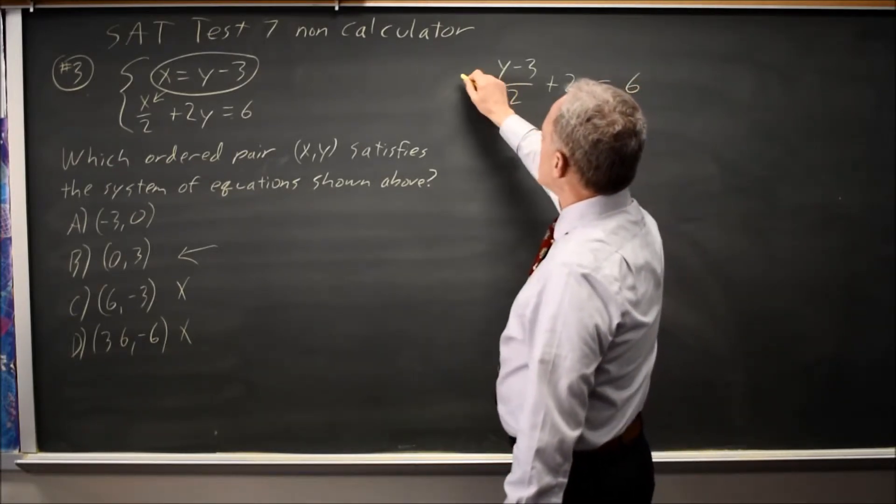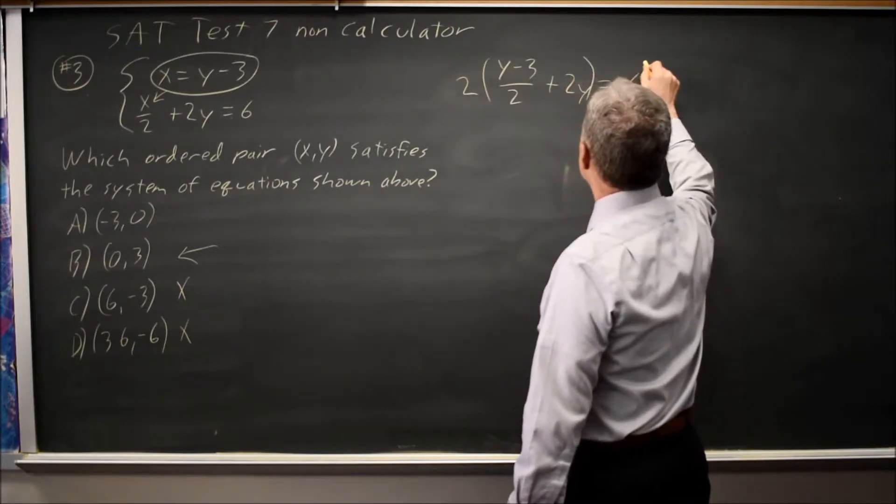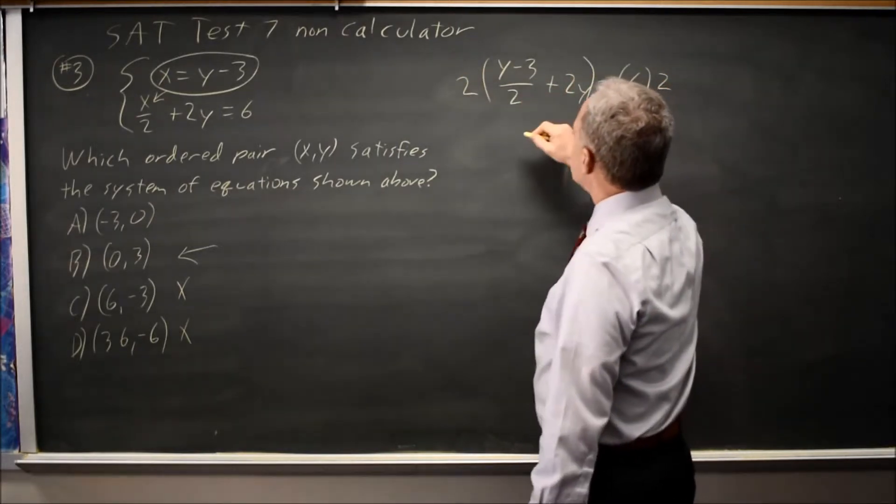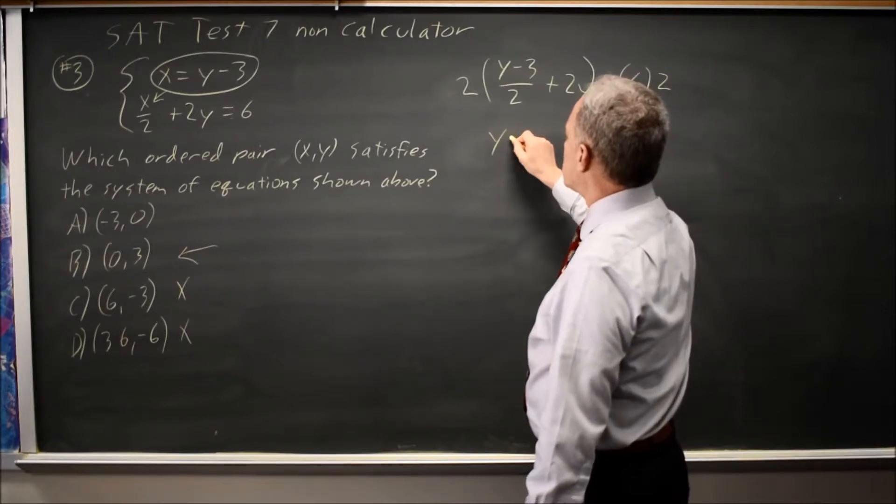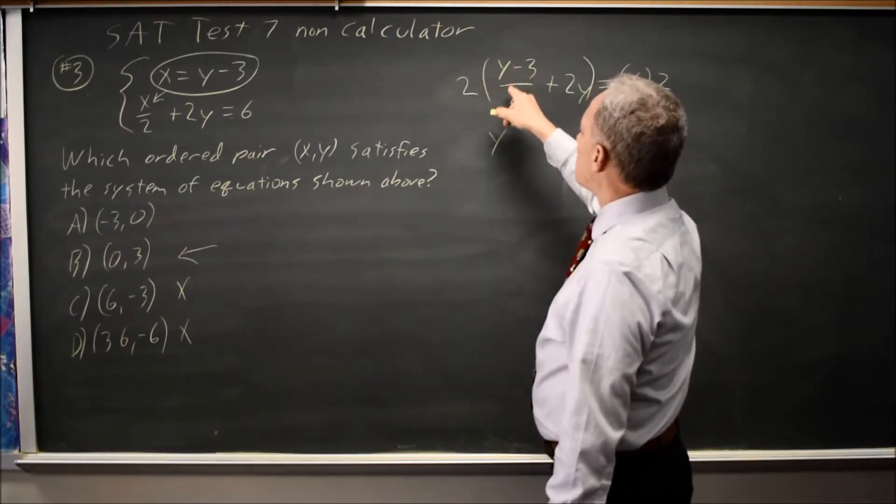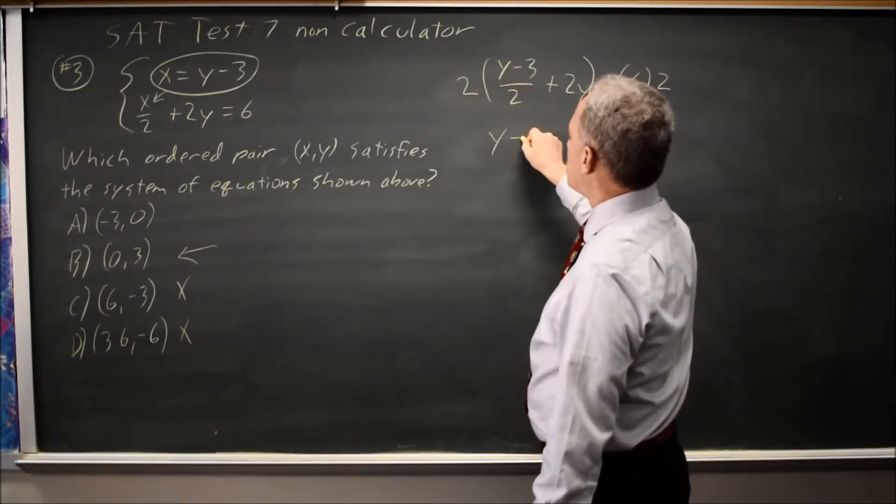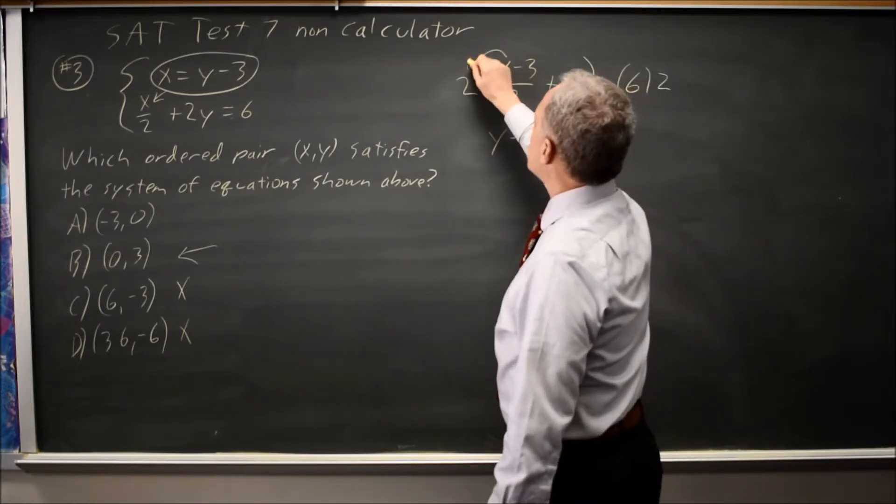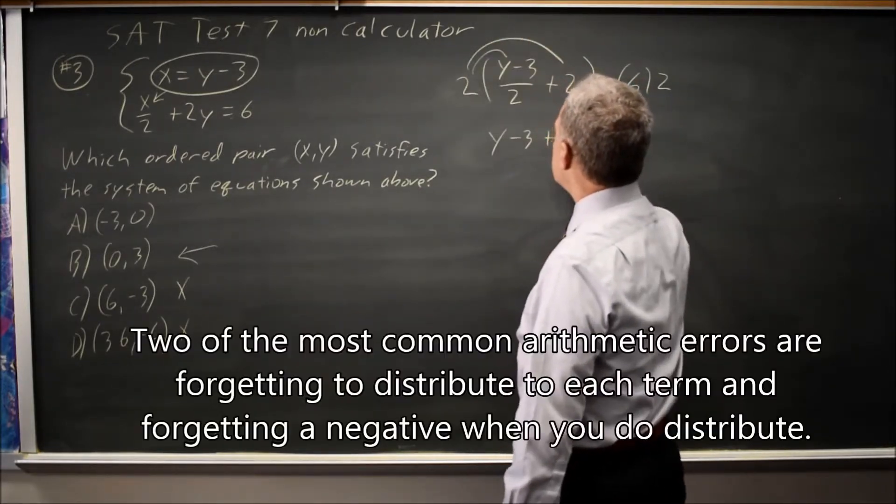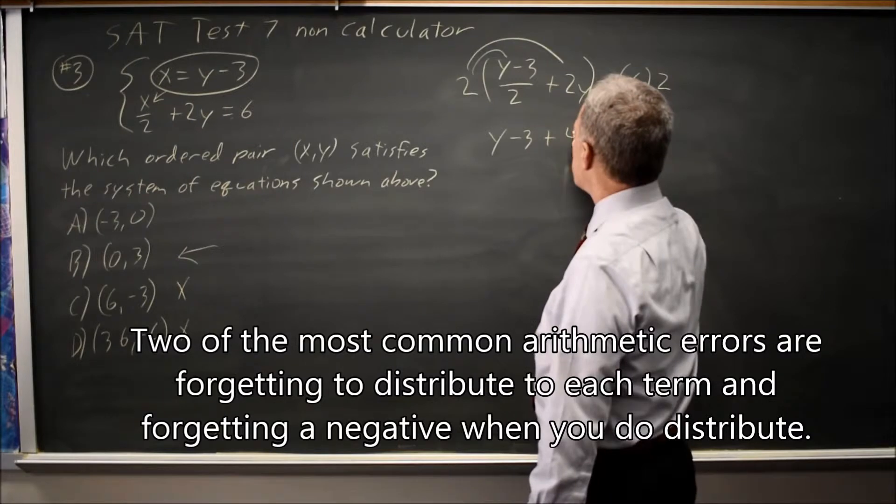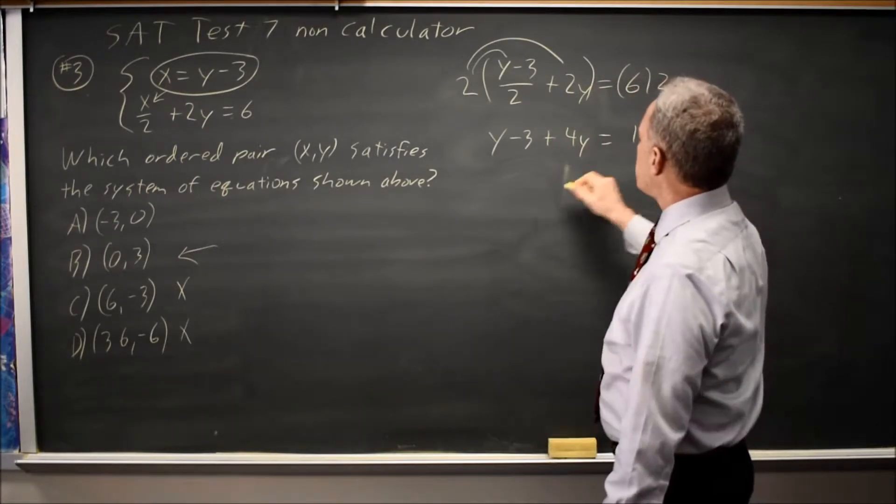I'm going to multiply both sides of this equation by 2 to get rid of the fraction because fractions are always awkward. 2 times (y minus 3) over 2, the 2s cancel on y minus 3. But I also have to distribute the 2 to the 2y, so 2 times 2y is 4y. 6 times 2 is 12.